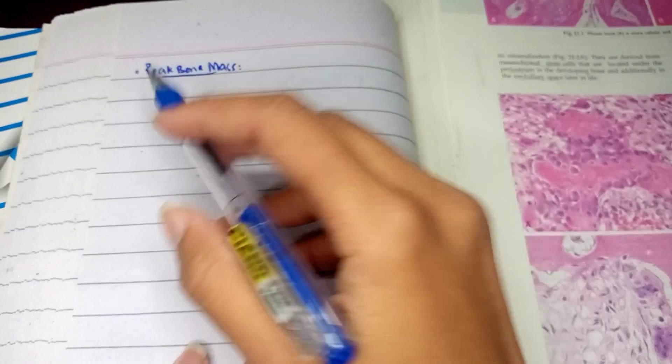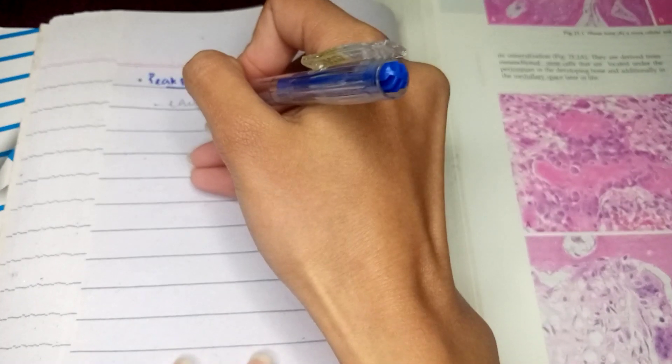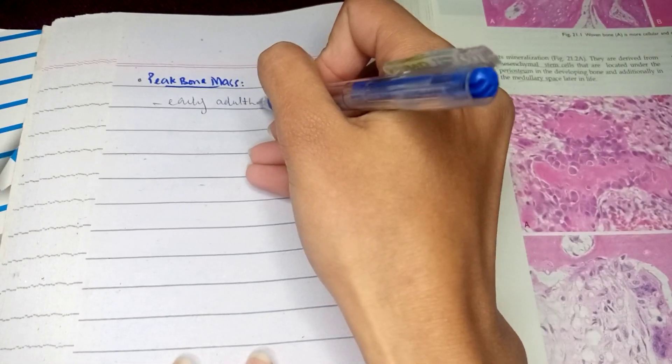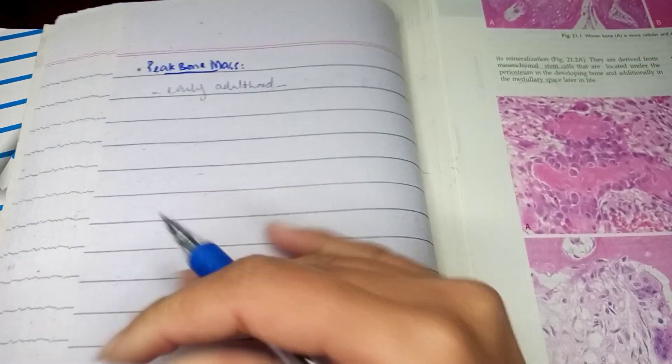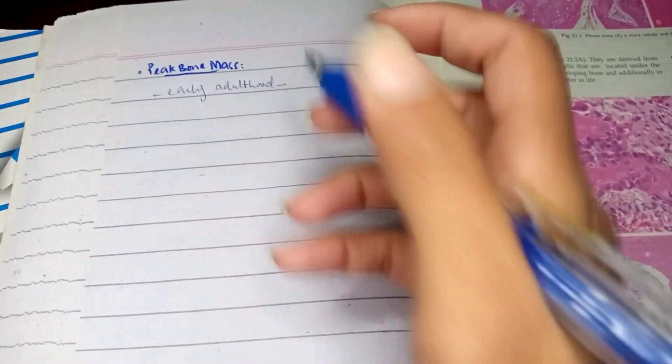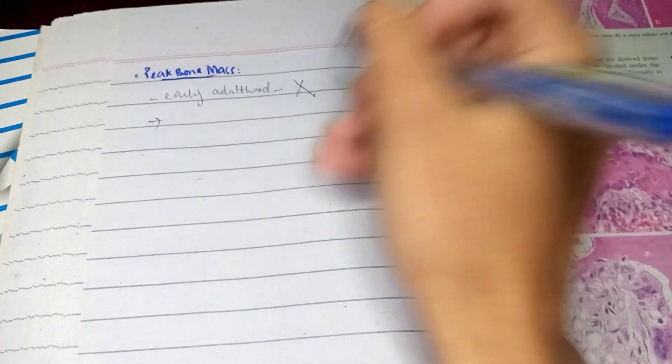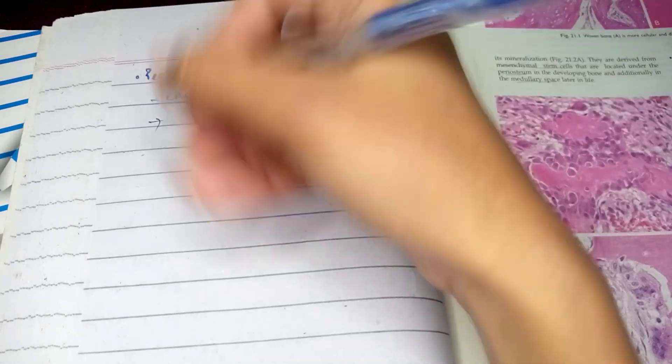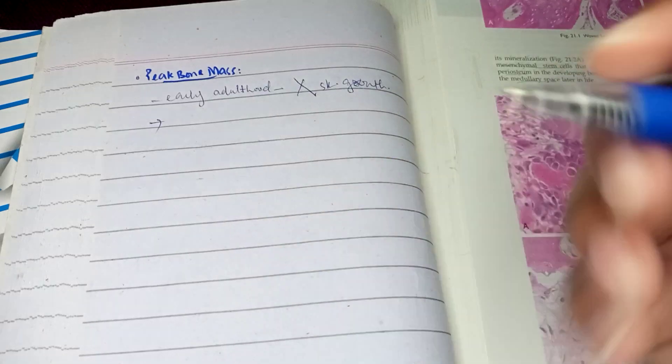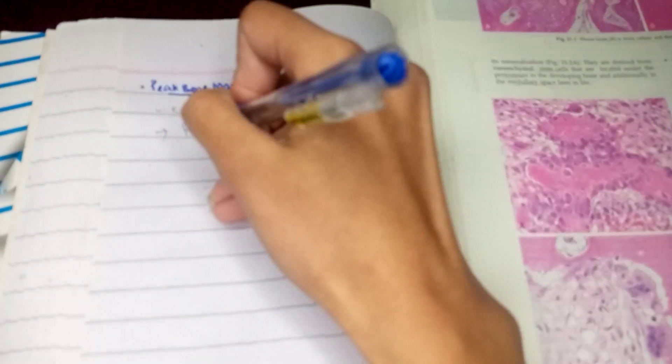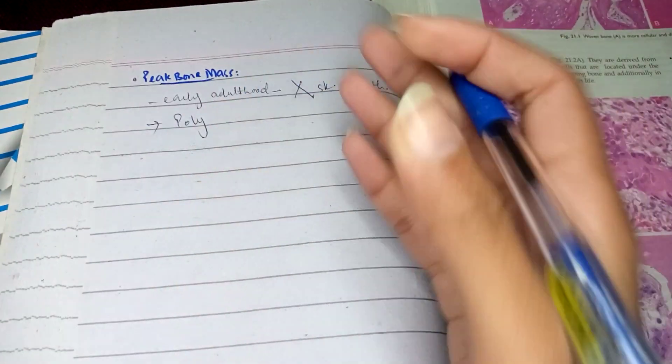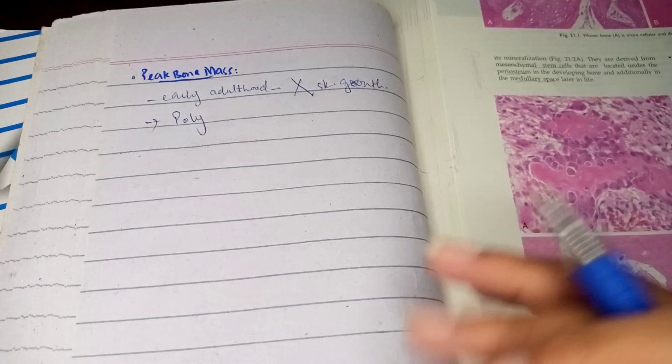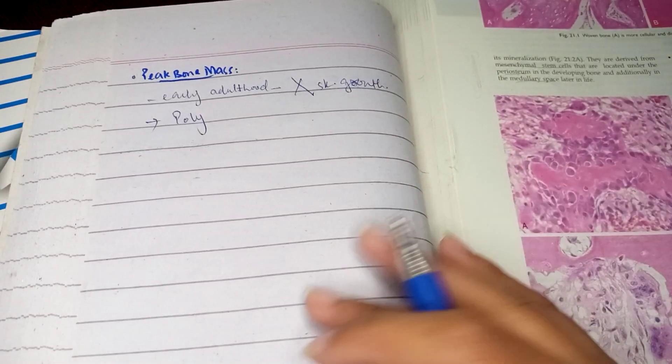Peak bone mass is achieved in early adulthood after cessation of skeletal growth. This is determined by some factors including polymorphism in vitamin D, LRP5/6 receptors, nutrition, and physical activity.